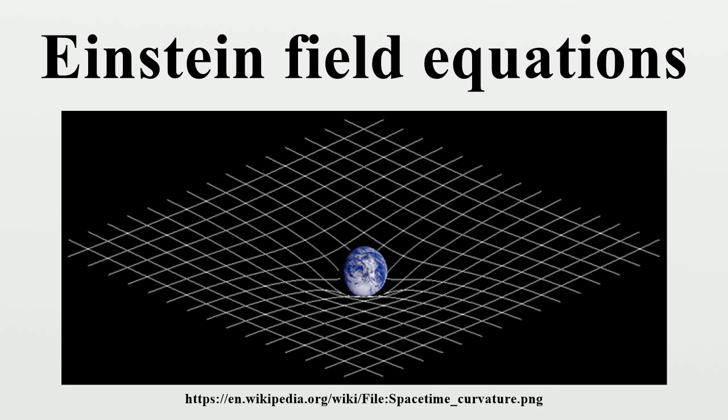One way of solving the field equations is to make an approximation, namely, that far from the source of gravitating matter, the gravitational field is very weak and the space-time approximates that of Minkowski space.